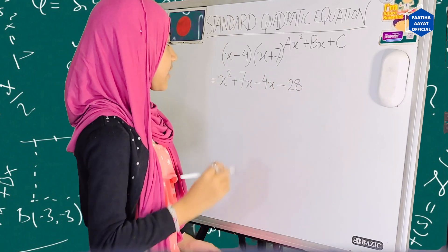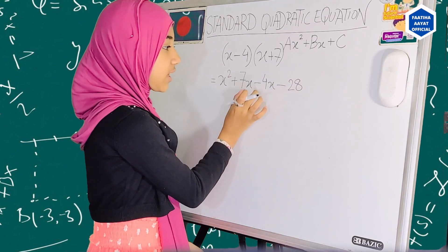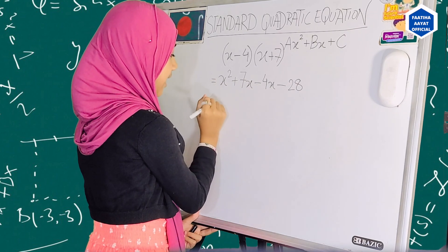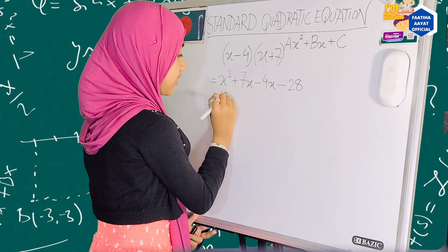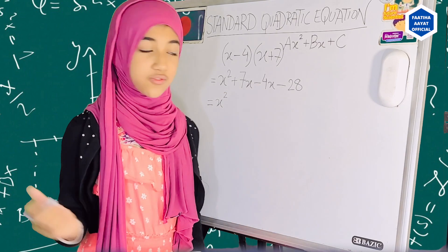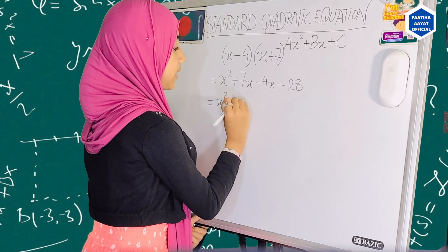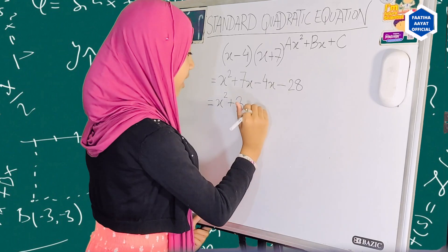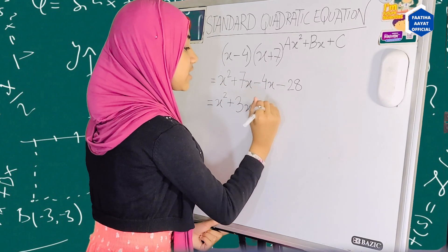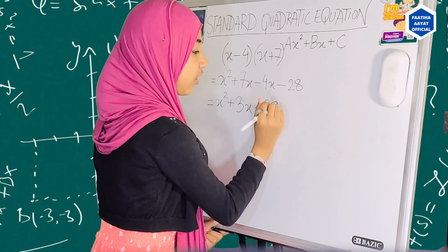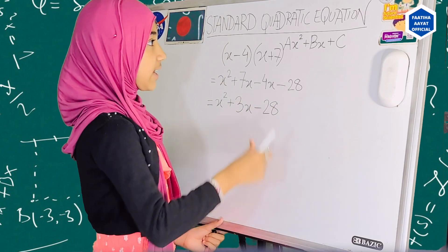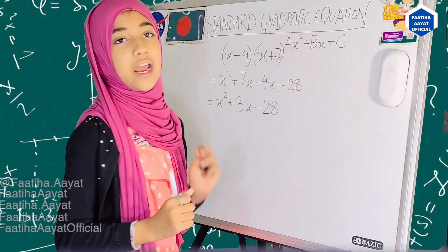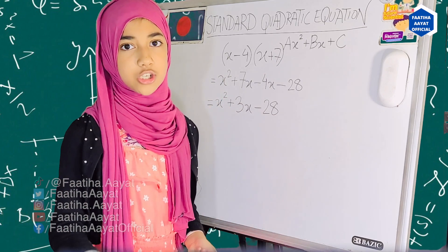Okay, so now as you can see, we can combine these two like terms. So the next line would be x squared. Plus 7x minus 4x is basically plus 3x. And then we have our constant minus 28 on the very right side. So this is how we write this equation in standard quadratic form.